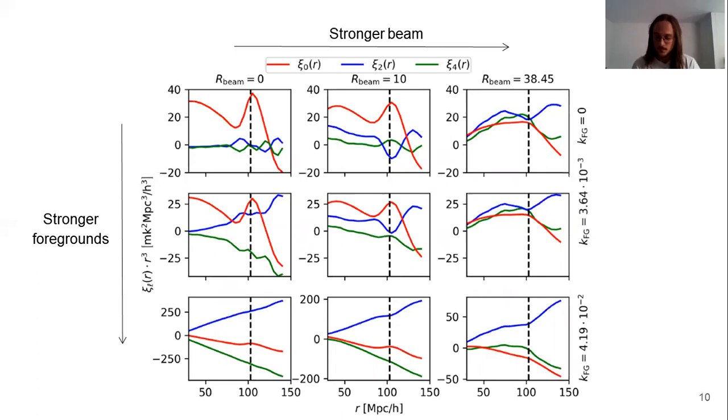In the other cases, the signal propagates to higher multipoles. And in several cases, we can see the BAO signal also in the quadrupole and in the hexadecapole.